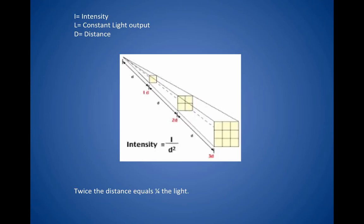The equation is: intensity equals constant light output over distance squared. So twice the distance equals one fourth the light, or half the distance equals four times the light.